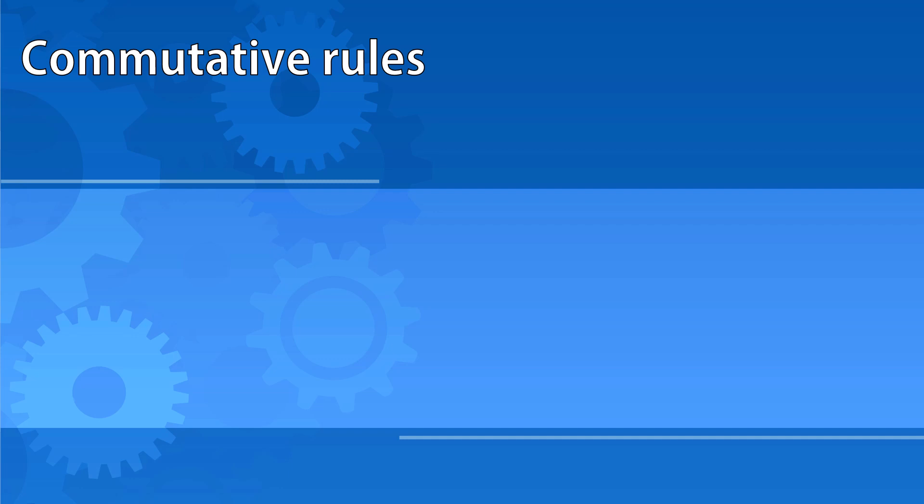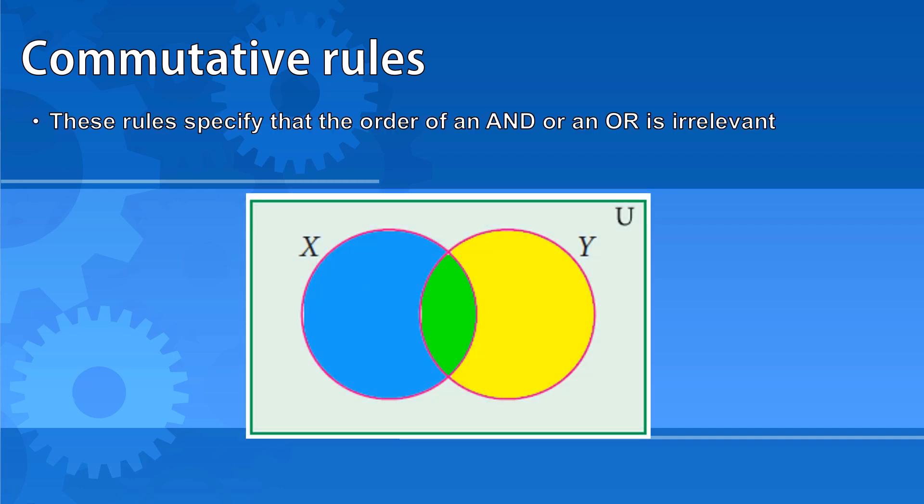Commutative rules specify that the order of an AND or an OR is irrelevant. The space taken up by x AND y is exactly the same as the space taken up by y AND x. In the same way, the space of x OR y is exactly the same as the space of y OR x.